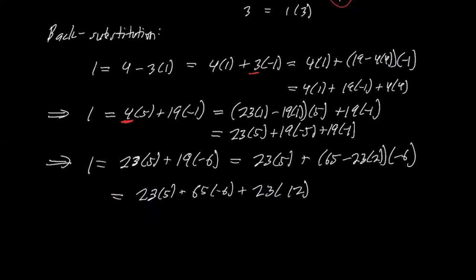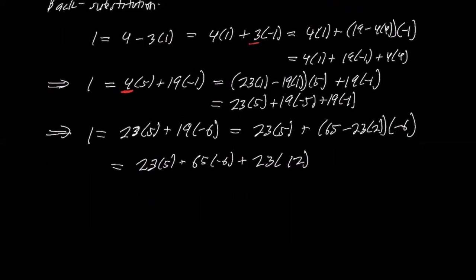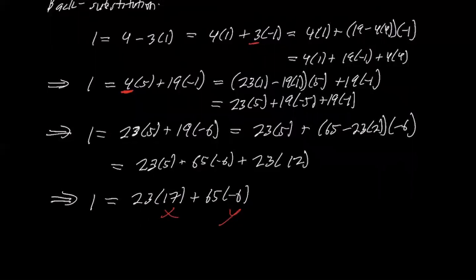And now when we combine these terms, we have 17 twenty-threes. So 1 is 23 times 17 plus 65 times negative 6. And so that means this is x and this is y, and those work. That is a solution to 23x plus 65y equals 1.